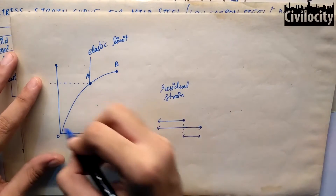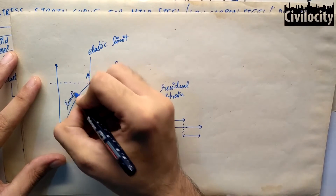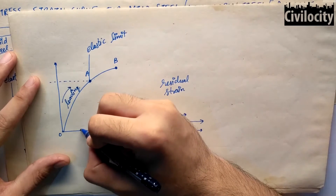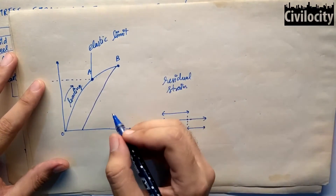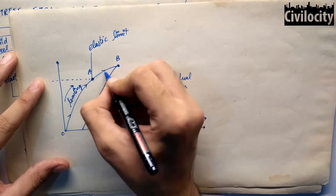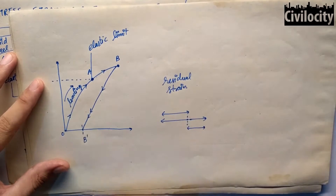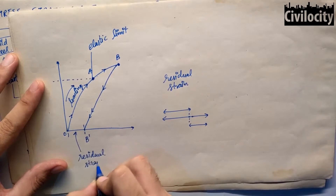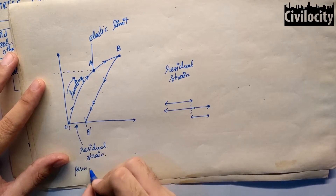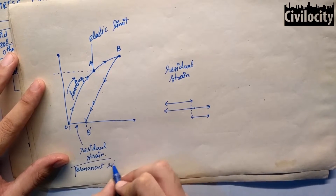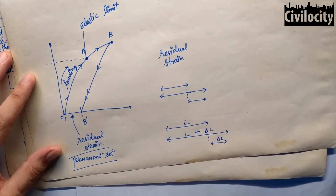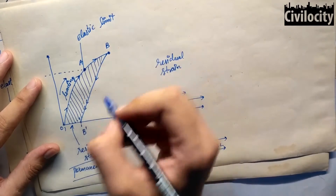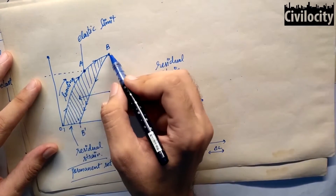If we apply tension, there will be some increment. So when loading was O, then A, then B, and when we unload, it will follow a linear curve. Where this unloading curve cuts our X-axis, I name that point B'. So O to B' is our residual strain. This means our bar will have permanent elongation throughout its life — if the original length was L, the new length becomes L plus delta L. O to B' is the residual strain, also called permanent set. The area O, A, B, B' is dissipated energy. A is our elastic limit, B is the applied load, and B to B' is our unloading curve.